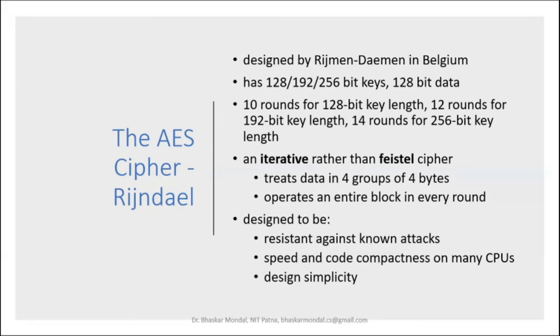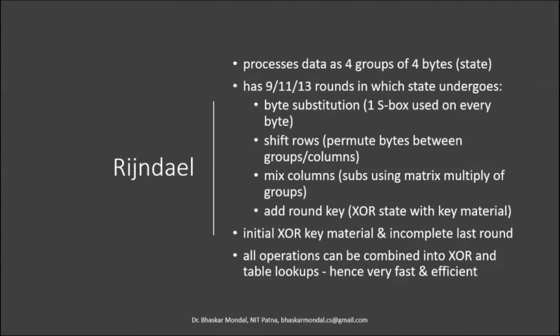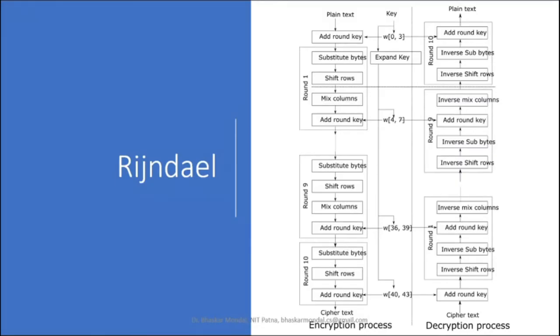AES is designed to be resistant against attacks, with speed and code compactness on many CPUs, and design simplicity. The structure of the cipher takes a 128-bit plaintext block and puts it through an Add Round Key step, which is basically an XOR with the round key.